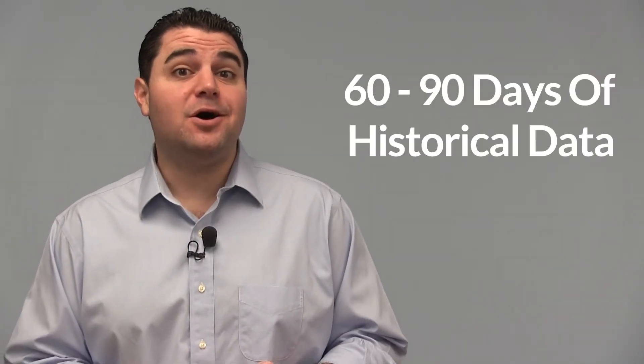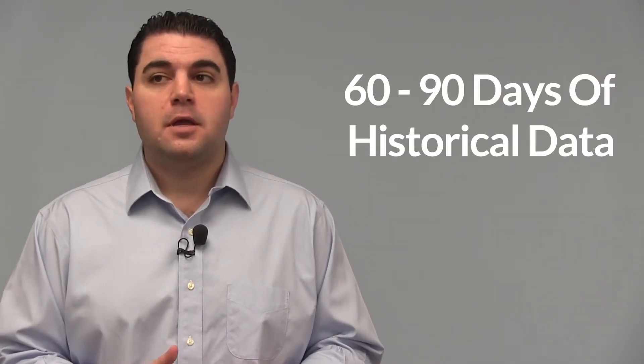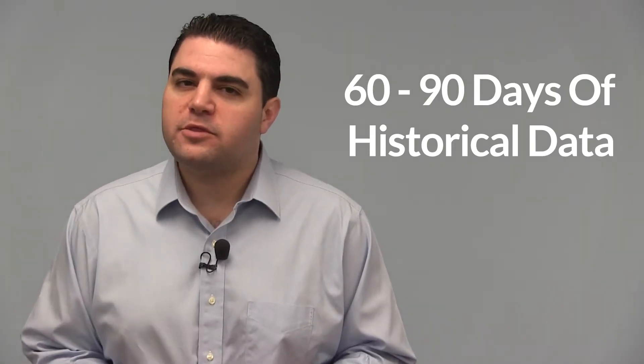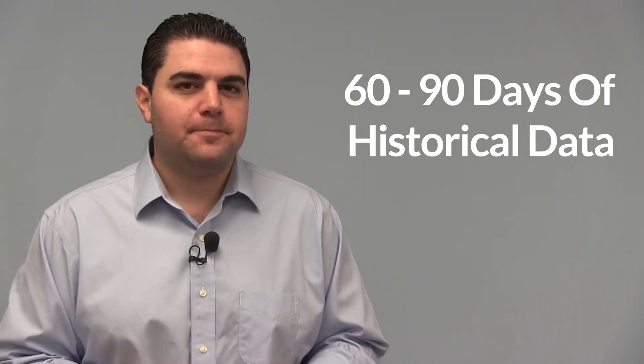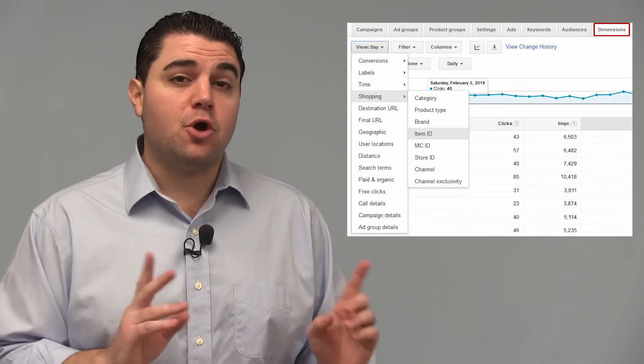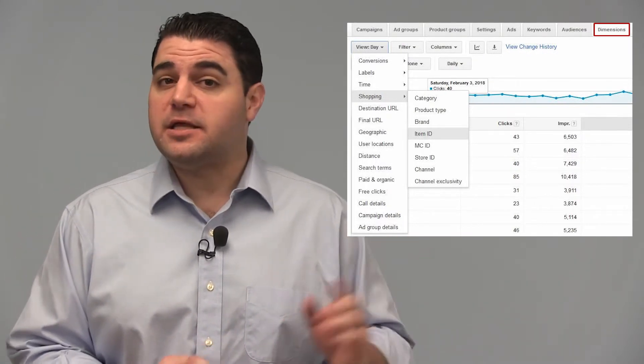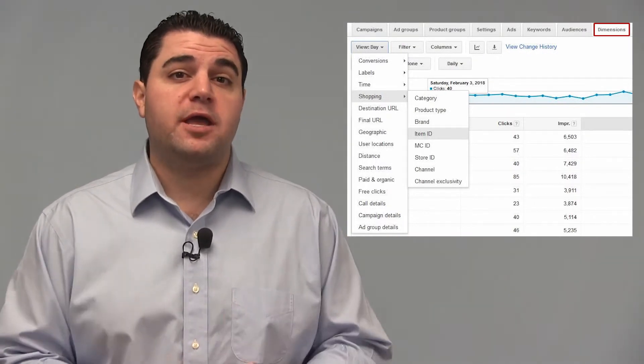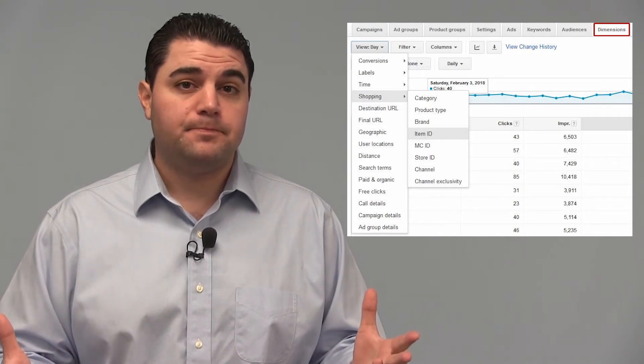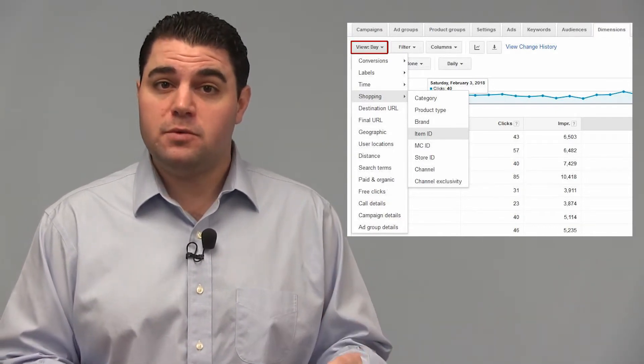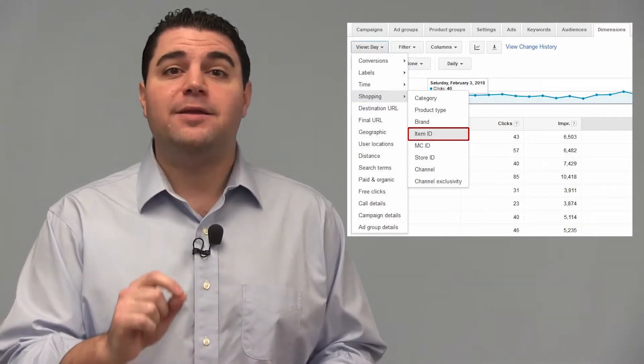And now that you have your 60 to 90 days of historical data, okay I'll let you get away with 30 but just this one time. So now what we're going to do is we're going to go into AdWords, we're going to select the dimensions tab for the primary campaign that you're running all the time. You're going to then select view, shopping, item ID.